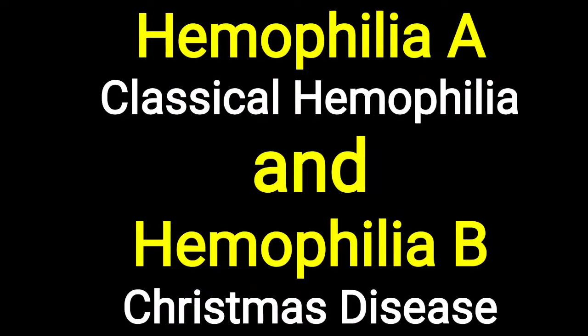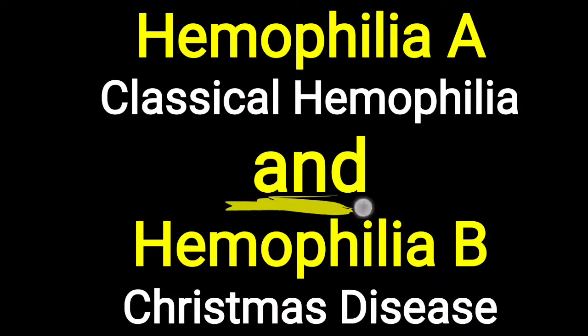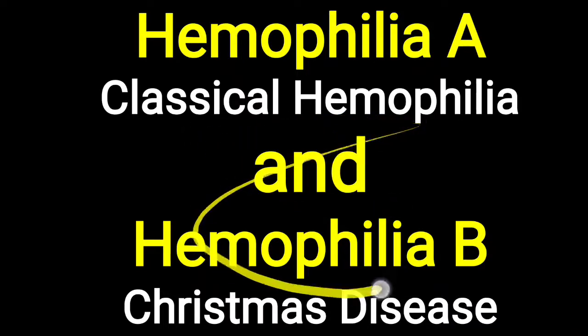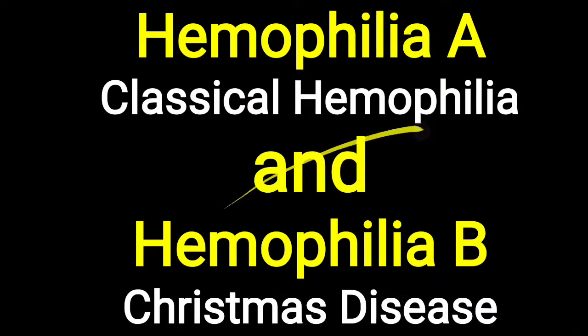Hello friends, today's topic is about Haemophilia A and Haemophilia B. Both are related with the defective coagulation process. They are also called classical haemophilia and Christmas disease. Both are X-linked recessive conditions, and we will look in detail at Haemophilia A, B, and C in this video.